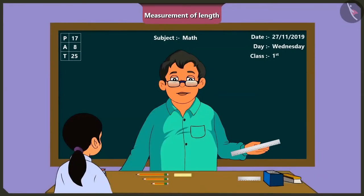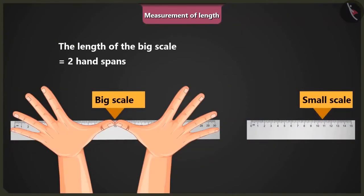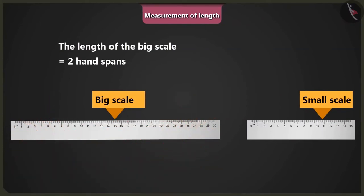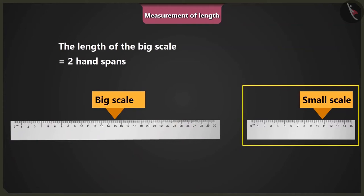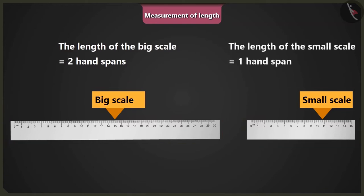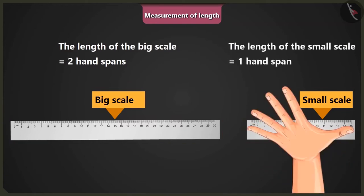Now look at the length of this big scale. It is equal to the length of two times my hand span. Can you determine the length of the smaller scale without measuring? Sir, the smaller scale seems to be half the length of the bigger scale. Then the length of the smaller scale should be equal to your one hand span.